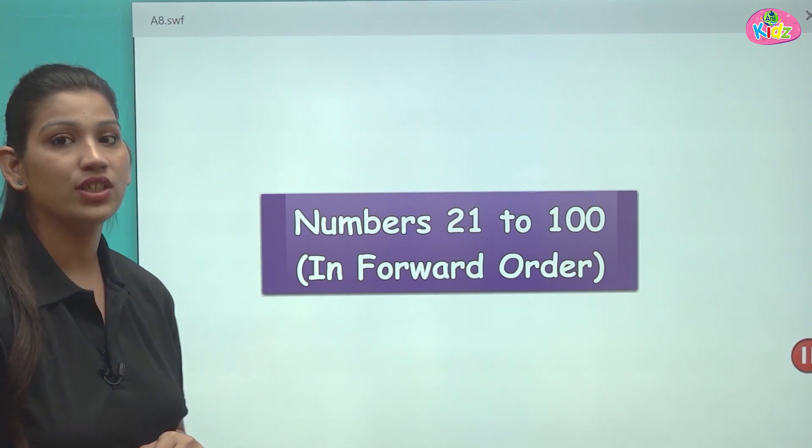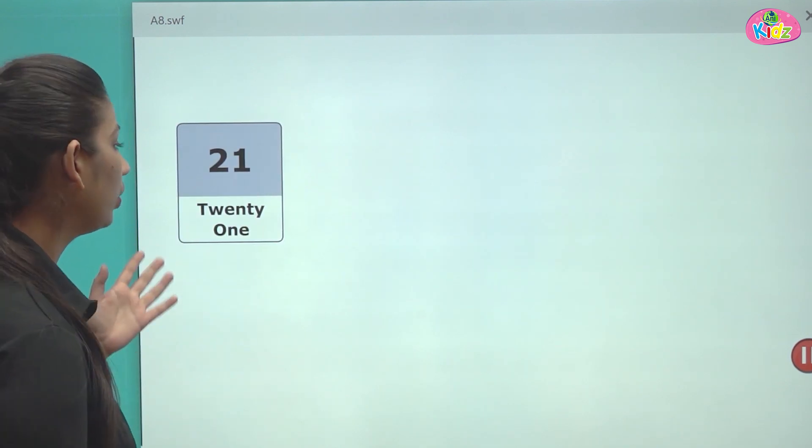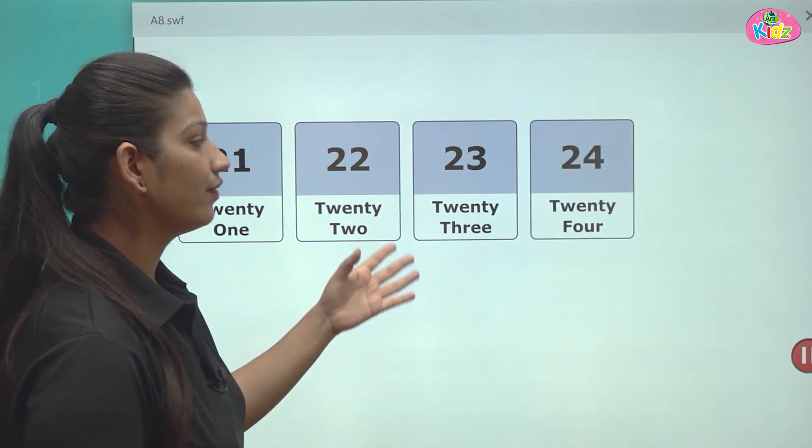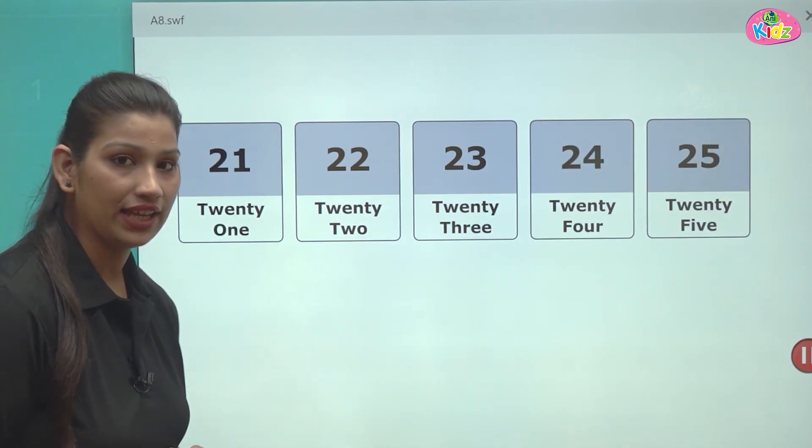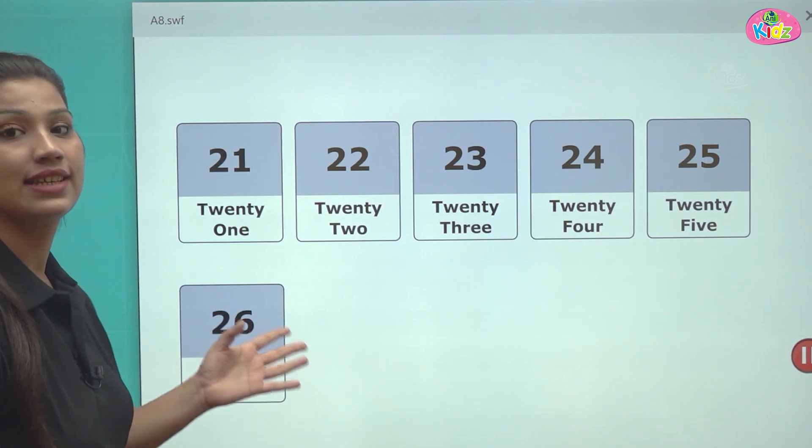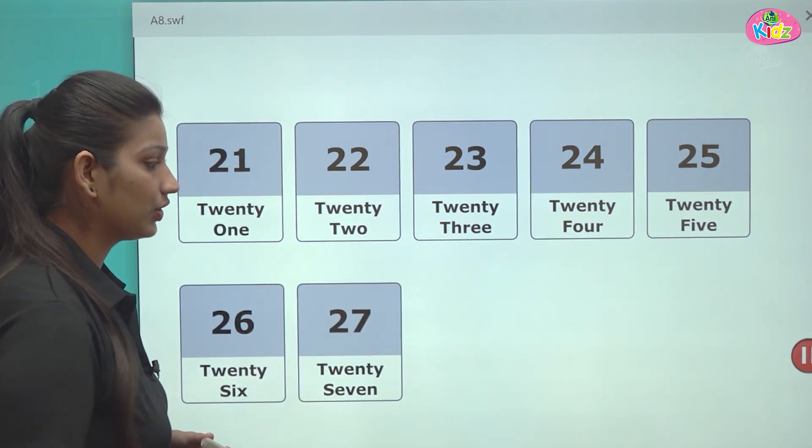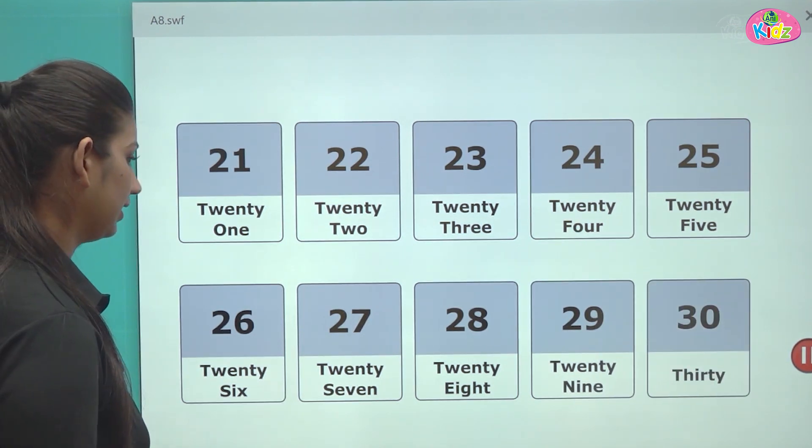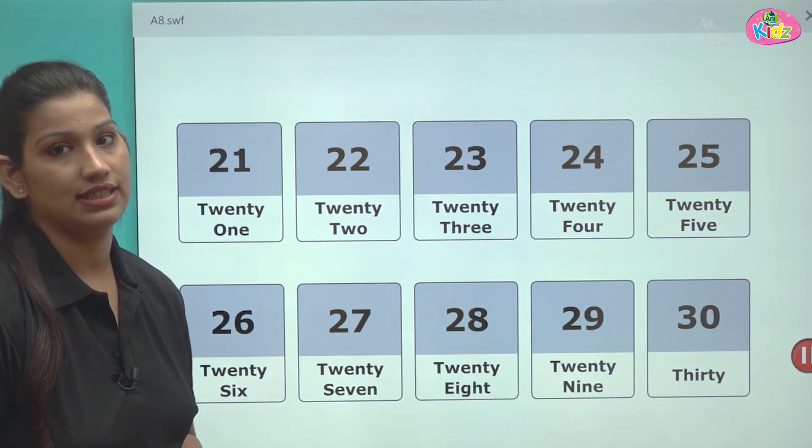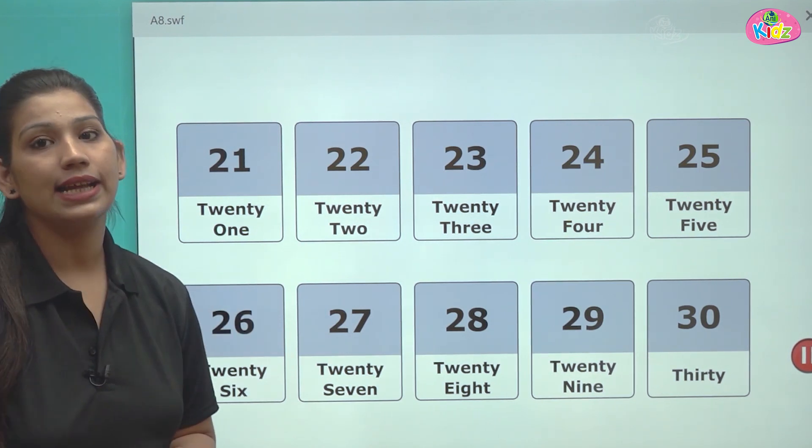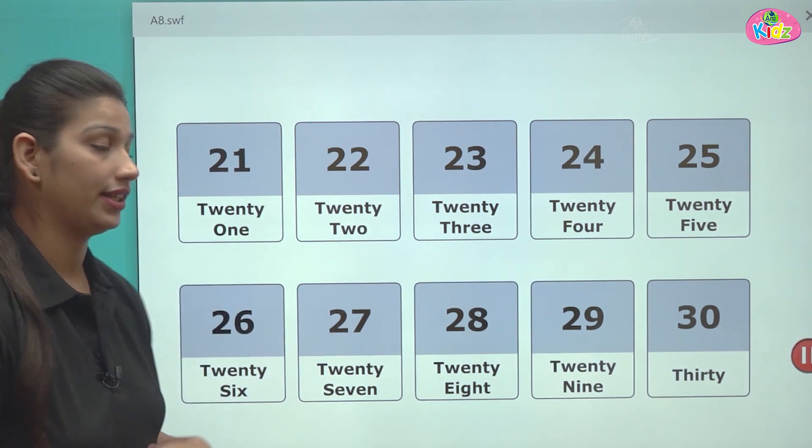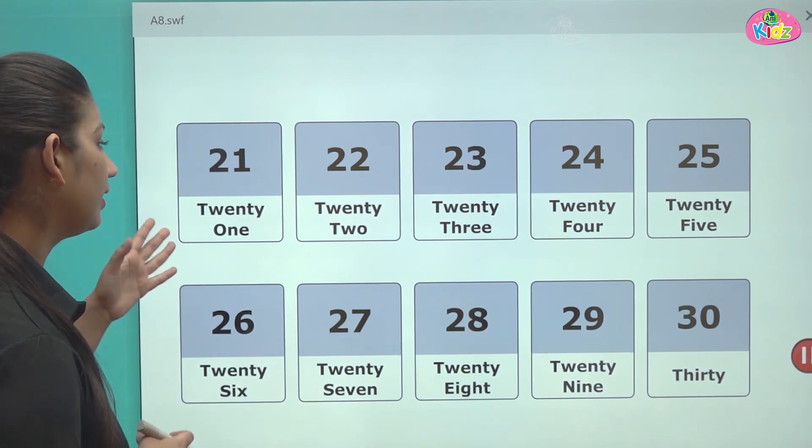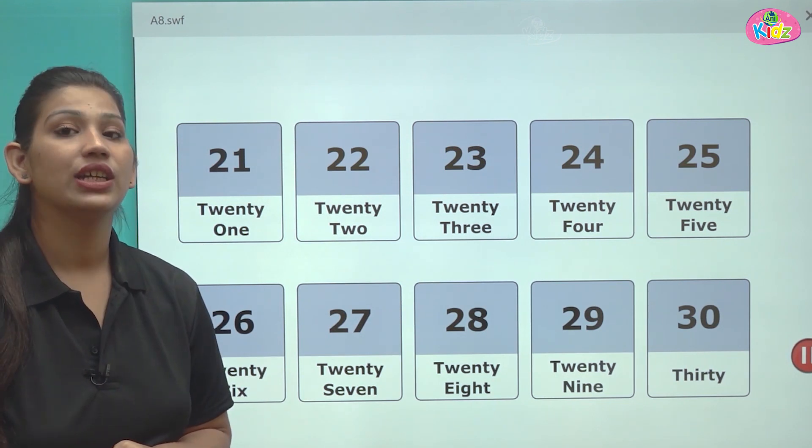First number we have after 20 is number 21, 22, 23, 24, 25, 26, 27, 28, 29 and 30. The last number is 30. Here students you can see the next ten numbers after 20. Comes 21. You all know the spelling of 20, T-W-E-N-T-Y.